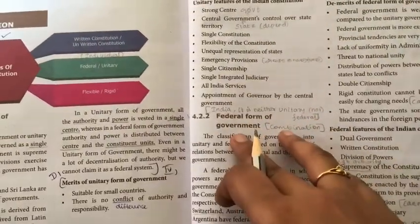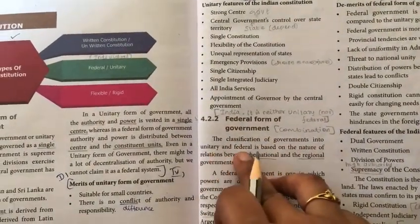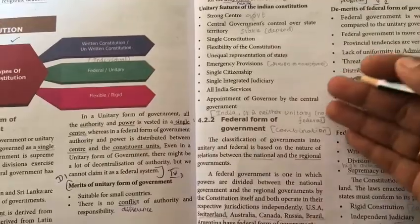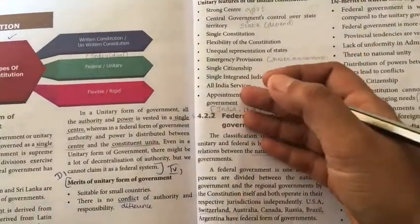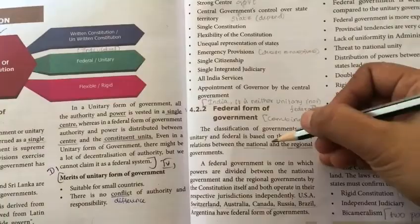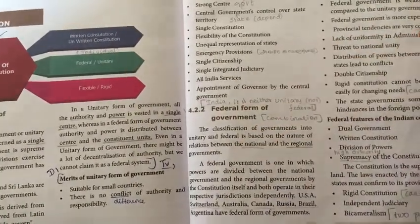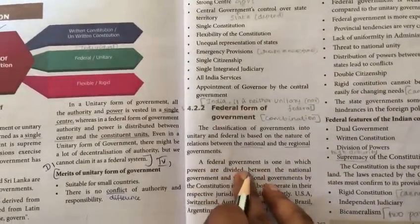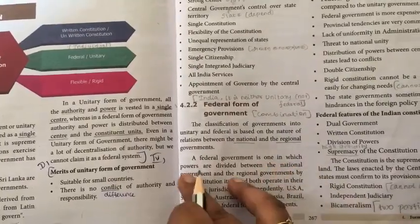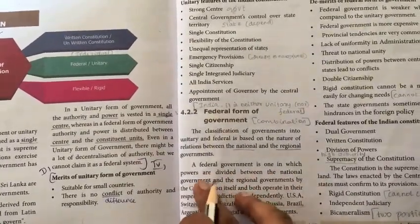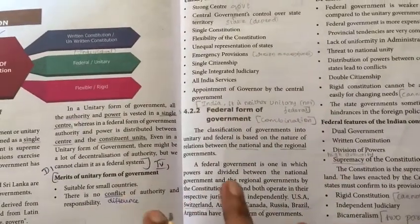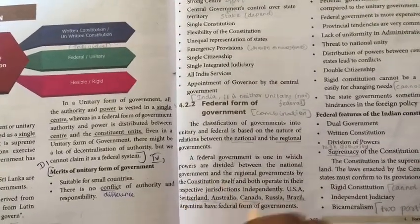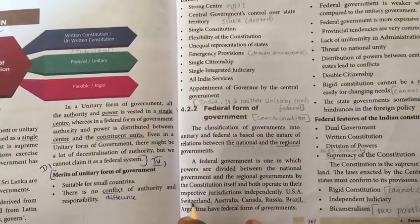The classification of government into unitary and federal is based on the nature of relations between the national and regional governments. A federal government is one in which powers are divided between the national government and the regional government. The federal form of government is followed in Switzerland, Australia, Canada, Russia, and Brazil.